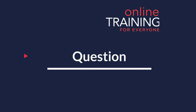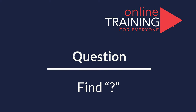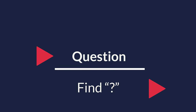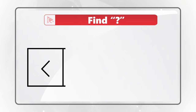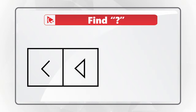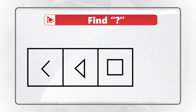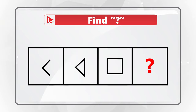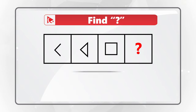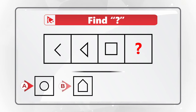Here's a wonderful question to test your analytical skills. You're presented with a series of shapes in the boxes. The first box has an arrow pointing left, the second box has a triangle pointing left, the third box has a square, and then comes the box with the missing shape. You have four different choices to choose from: A, B, C, and D.